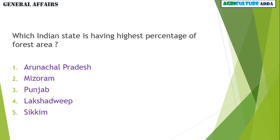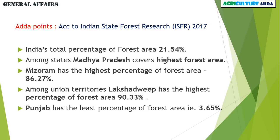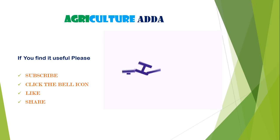Which Indian state has the highest percentage of forest area? Arunachal Pradesh, Mizoram, Punjab, Lakshadweep, or Sikkim? The answer is Mizoram. According to the Indian State Forest Report 2017, India's total percentage of forest area is 21.54%. Among states, Madhya Pradesh covers the highest forest area, while Mizoram has the highest percentage of forest area at 86.27%. Among union territories, Lakshadweep has the highest percentage at 90.33%.